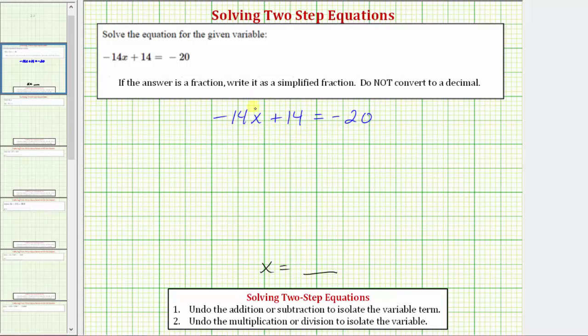Looking more closely at the left side of the equation, because negative 14x means negative 14 times x, we need to undo this multiplication as well as undo this addition in order to isolate x on the left side of the equation and find the solution.